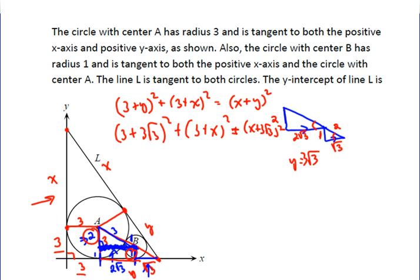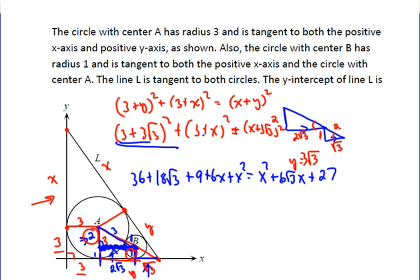We got (3 plus 3 root 3) squared plus (3 plus X) squared equals (X plus 3 root 3) squared. Go through and multiply everything out. When you square this you end up with 9 plus 27 when you square the first and the last term, which is 36. The middle two terms multiplied together give you 9 times 2 is 18, so 36 plus 18 root 3. This one is 9 plus 6X plus X squared, and this over here is X squared plus 6 root 3 X plus 27.